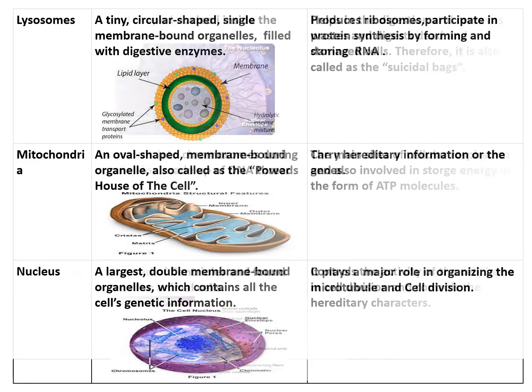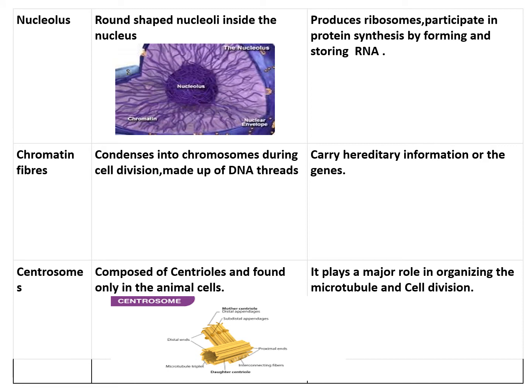If the nucleus dies, the cell will die because it is the control center of the cell, controlling all its activities. Next is the nucleolus, which is present inside the nucleus. It is a round or spherical-shaped structure located within the nucleus. Its function is to produce ribosomes and to participate in protein synthesis by forming and storing RNA — ribonucleic acid.